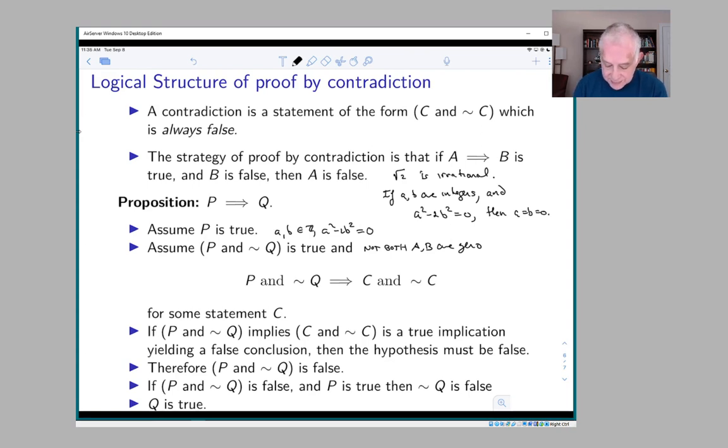What we showed is that if we had a squared minus 2b squared equal to 0 with not both a and b equal to 0, we were able to prove that b is even and b is odd.